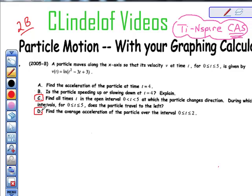Having said that, we're given this velocity function from a 2005 exam. V of t, the velocity at any given time, is ln of t squared minus 3t plus 3. In question C, we're asked to find all times in the open interval, t is greater than 0 but less than 5, where the particle changes direction. It asks during which intervals does the particle move left.